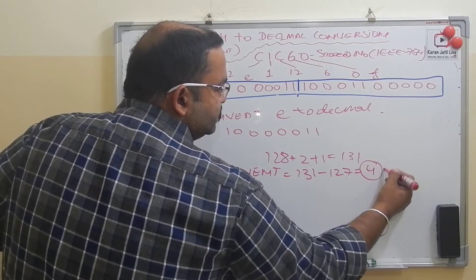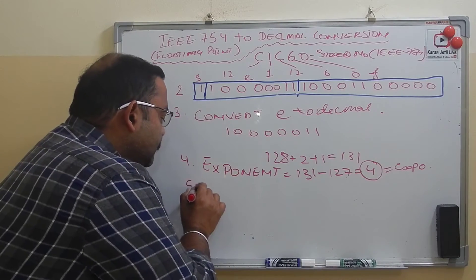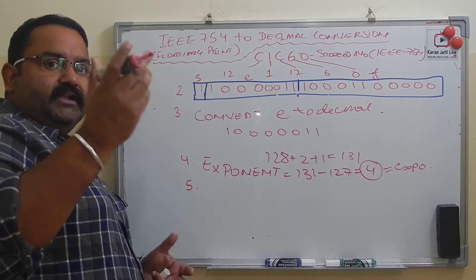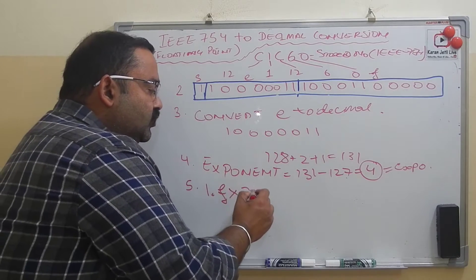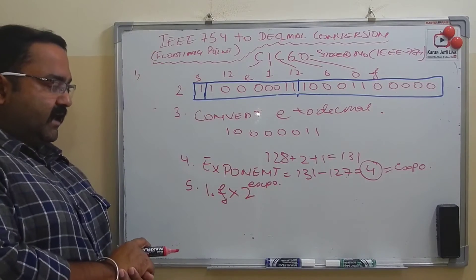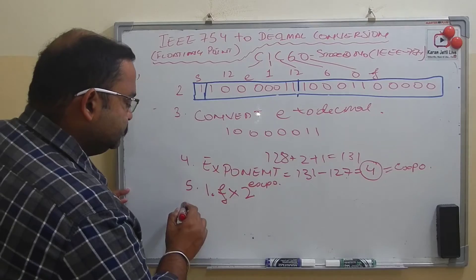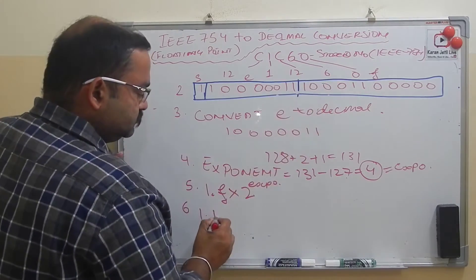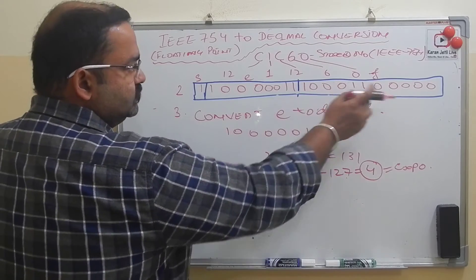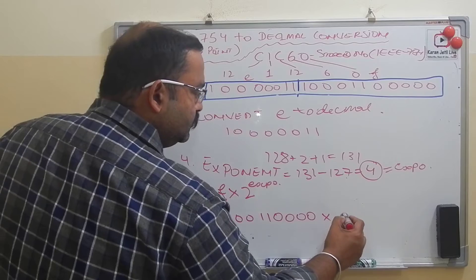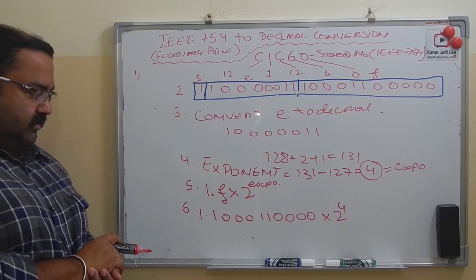Step five: write the fractional part in scientific notation as 1.f × 2^exponent. So we have 1.f × 2^4. The fractional part f is: 1, then three 0s, then two 1s, then more 0s, into 2 to the power 4.